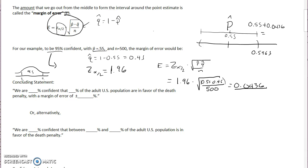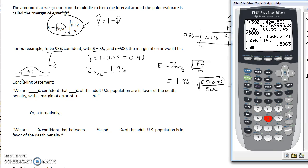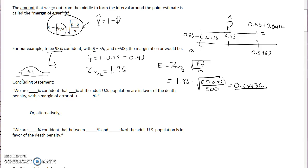And then I'm going to get a lower value by taking my 0.55 and subtracting that margin of error of 0.0436, which is 0.5064. So I am in between these values.